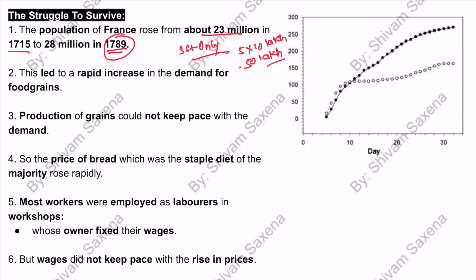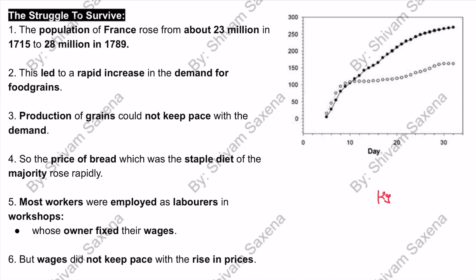All these extra people, along with the existing population, would demand food grains. Now let's pause here and understand the problem of demand and supply. The golden rule is that demand should equal supply. For example, if there are 100 people and each requires 1 kg of food grain, the total requirement is 100 kg — so supply should also be 100 kg.